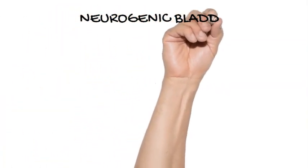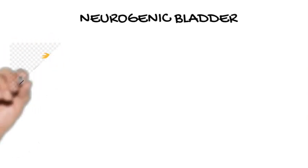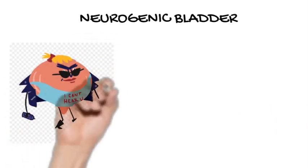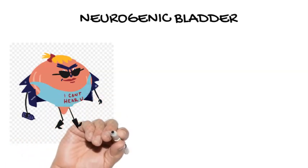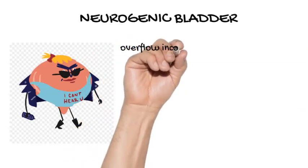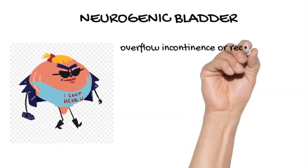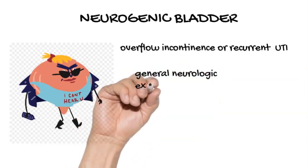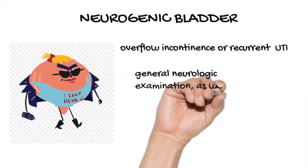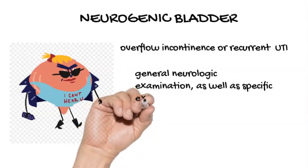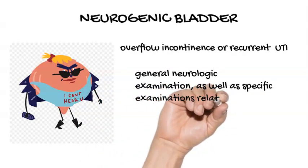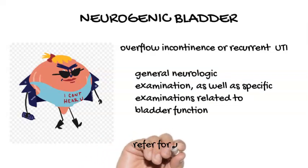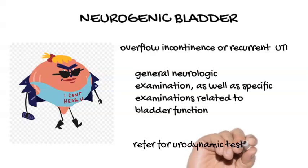Neurogenic bladder. Patients can present with overflow incontinence or recurrent UTI. A history of neurologic disease, spinal trauma or tumor, diabetes, and any change in baseline neurologic status should be carefully noted. Patients with suspected neurogenic bladder should undergo a general neurologic examination as well as specific examinations related to bladder function. These include the bulbocavernosus reflex, anal reflex, voluntary contractions of the pelvic floor, anal sphincter tone, and sensation in the S2 to S5 dermatomal distribution, which is in the perianal and saddle area. Imaging studies looking for tumors or other lesions in the brain and spinal cord may also be necessary. Once neurogenic bladder is diagnosed, the patient should be referred for urodynamic testing to guide ongoing management.